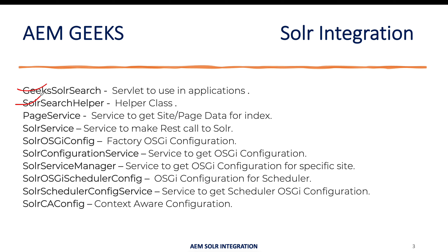We'll have a servlet — the Geeks Solr Servlet. SolarSearchHelper will be a helper class, a plain Java class containing all the objects we need. Page Service is a service that gets all the AEM data — it iterates the pages, gets data, and pushes that data to Solar Service. Solar Service is the actual service that makes the call to the Solr server. The OSGi configuration will be a factory configuration containing the site ID and Solr endpoint URLs. Because it's a factory configuration, we can create multiple instances — one instance per website.